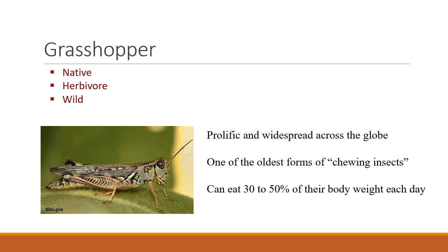Grasshoppers are very important herbivores on rangelands. They're native, wild, and prolific across the globe, with many species in North America. They are one of the oldest forms of chewing insects — they don't digest cellulose but instead break up plant cells and let the cell contents of starches and other compounds out, which they can then digest. Because of this feeding strategy, they can eat a third to half of their body weight per day, so they can have a huge impact and be large grazers on rangelands.